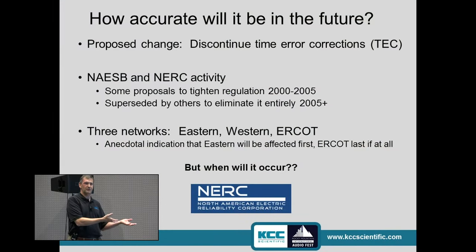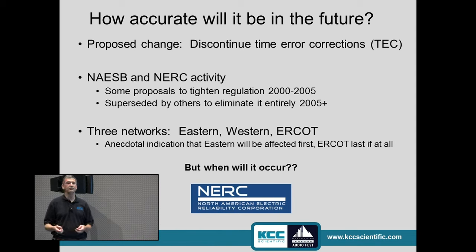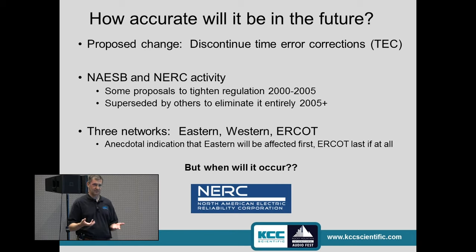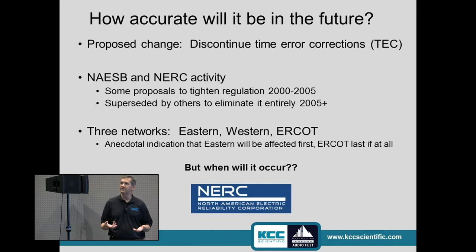The number of cycles counted over 24 hours is going to work out about right. Something like your turntable will rotate on the order of 48,000 times per day and it'll be exact — but I can't guarantee what the speed is going to be like in between. There are two organizations: NERC, the governing body in the US that regulates power generation companies, and NAESB on the commercial side. They initially proposed improving regulation early this century, but after studying it for a few years, they considered simply getting rid of Time Error Correction entirely.